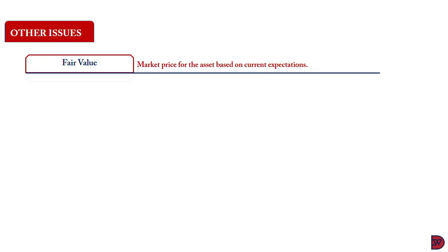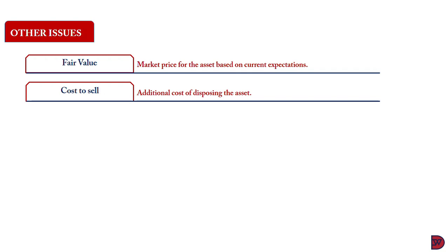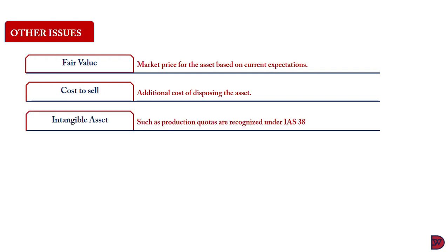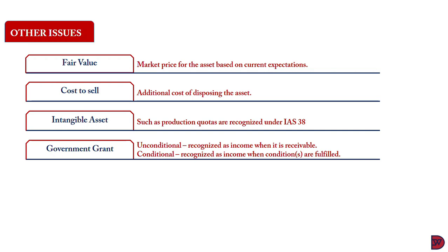The fair value is the market price for the asset based on current expectation — it can be described as the price that two willing, knowledgeable parties at arm's length will arrive at for the asset. Cost to sell is the additional cost of disposing of the asset, which can include commissions, levies, transfer taxes and duties. Intangible assets, such as a production quota or a milk quota, are not treated under IAS 41 but under IAS 38 — intangible assets. Unconditional government grants are recognized in the statement of profit or loss as income when they become receivable, while conditional government grants are also recognized as income but only when the conditions are fulfilled.